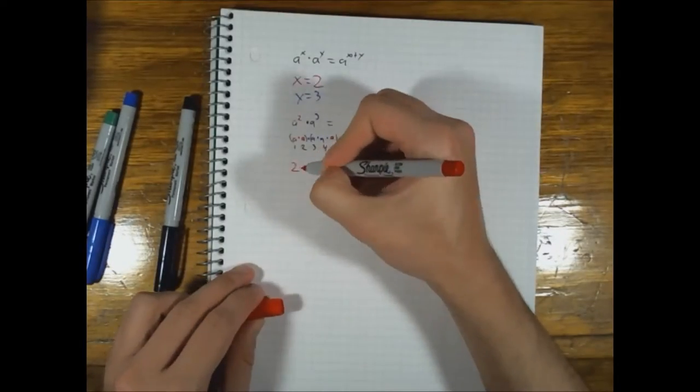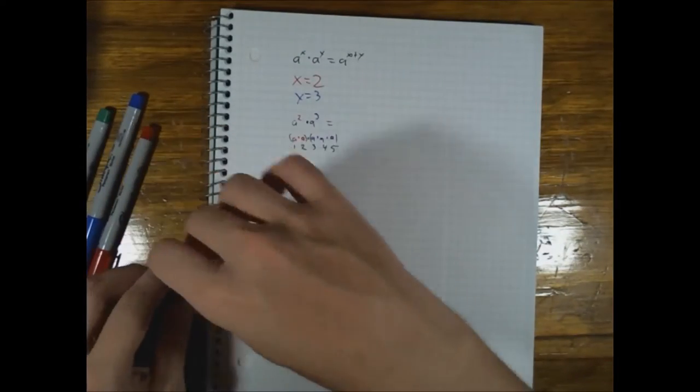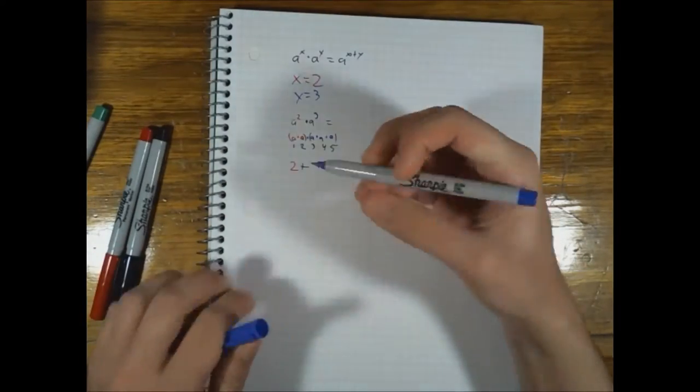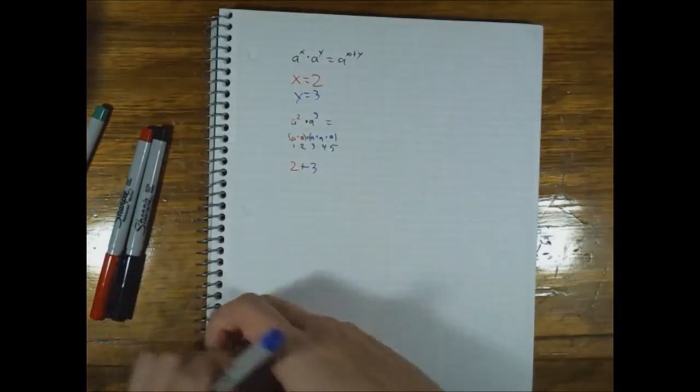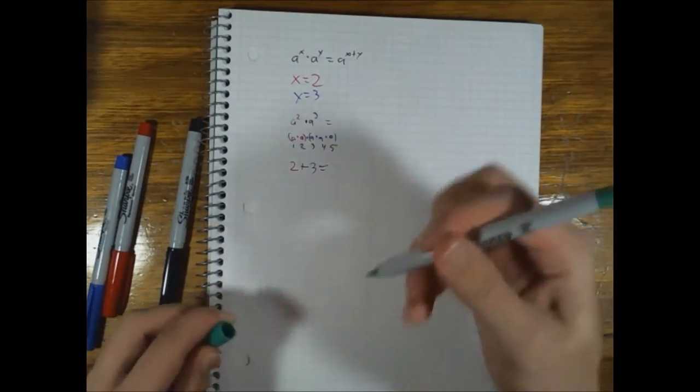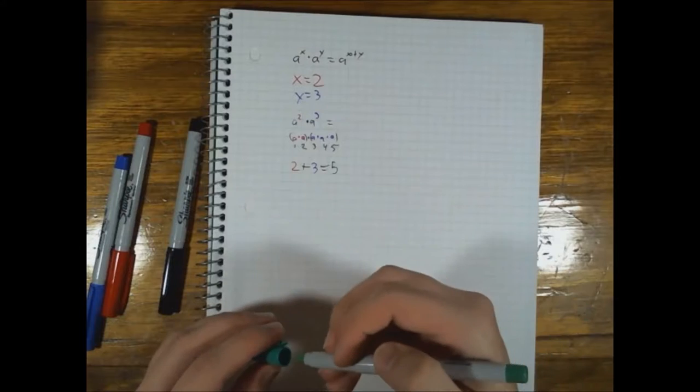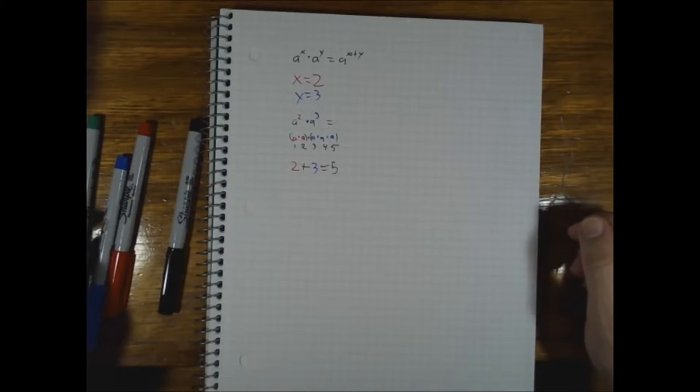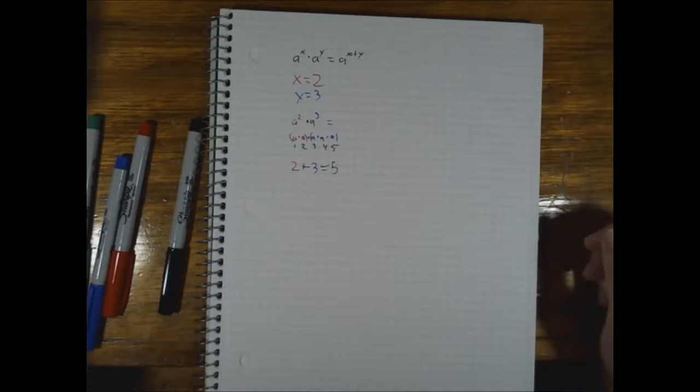And 2 plus 3 is equal to 5. And so, that's pretty simple, really. You know, a to the x times a to the y is equal to a to the x plus y. Really, really quite simple.